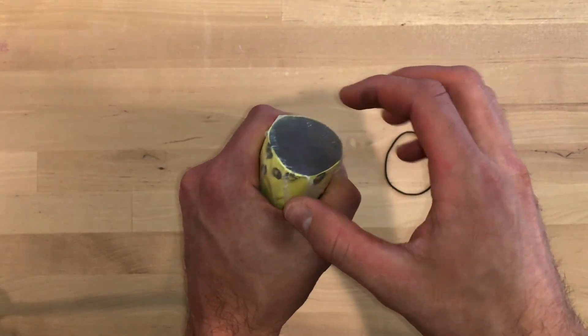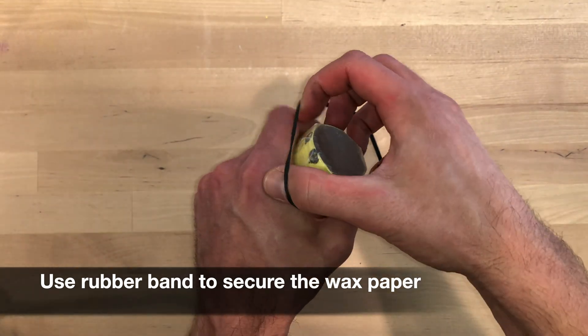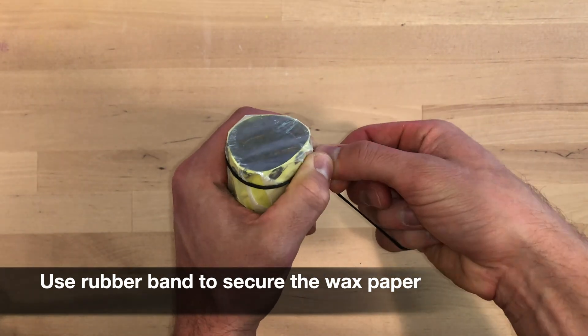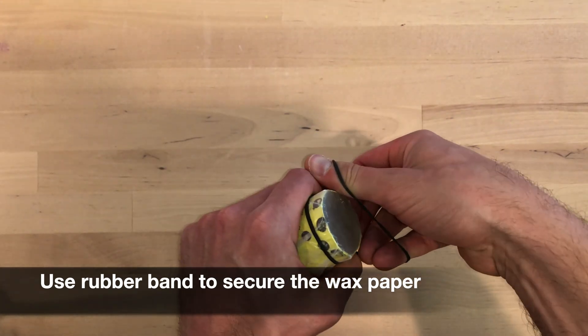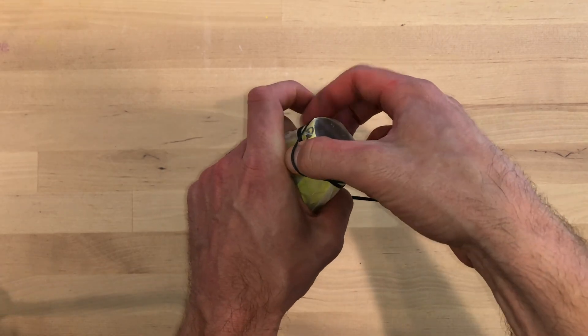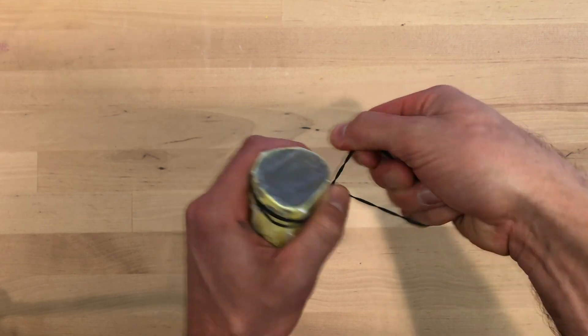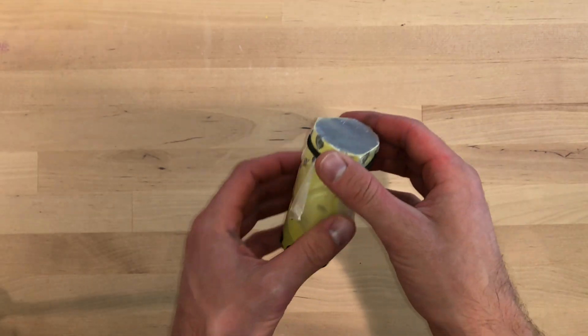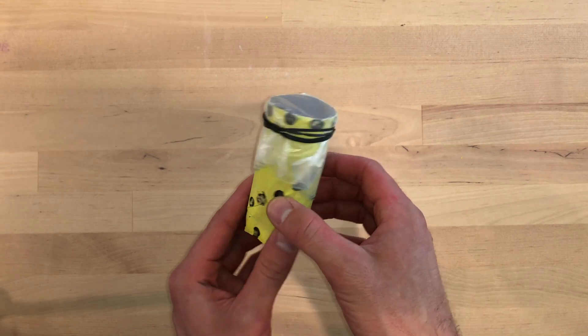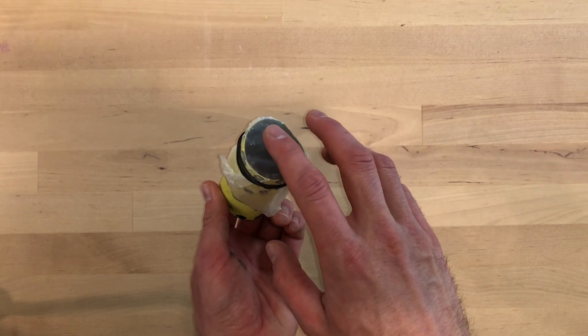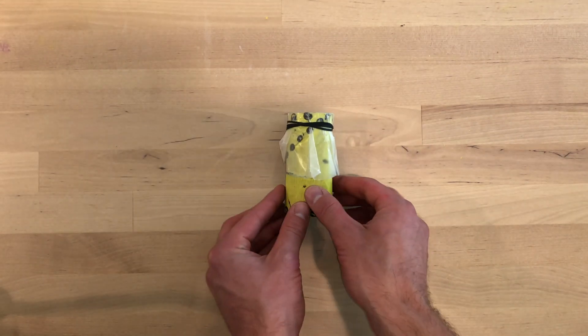Then take your rubber band and wrap it around your toilet paper roll so that it secures the wax paper. Check and make sure that all of the wax paper is underneath your rubber band. Great job!